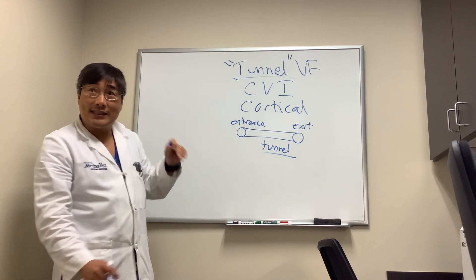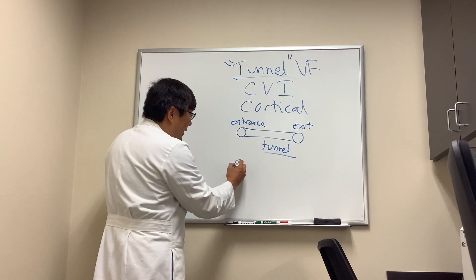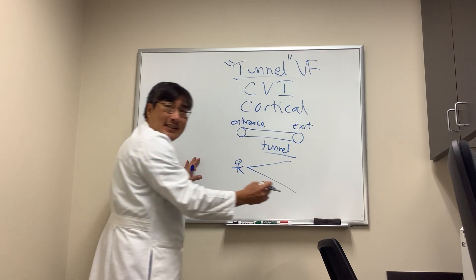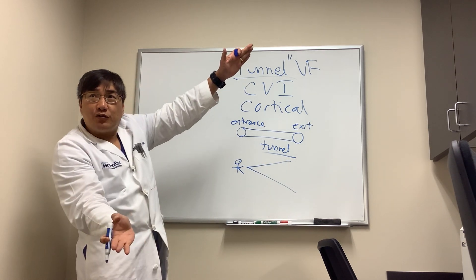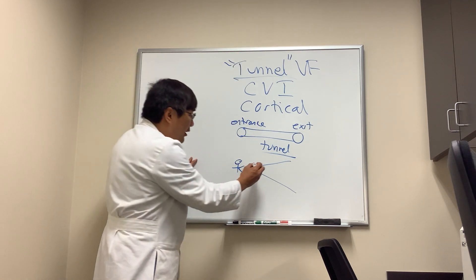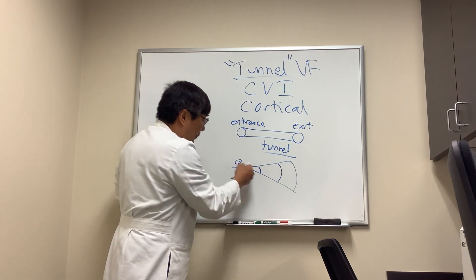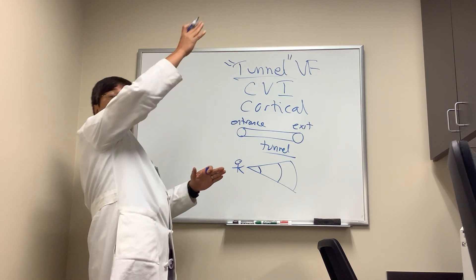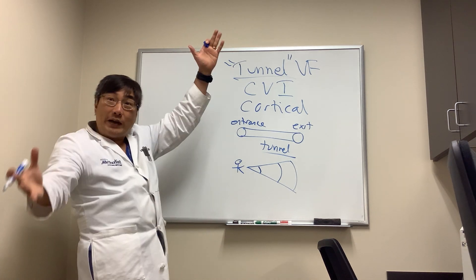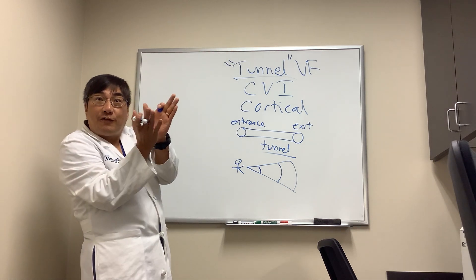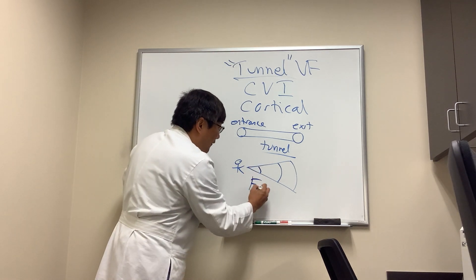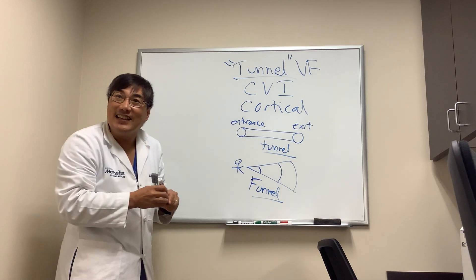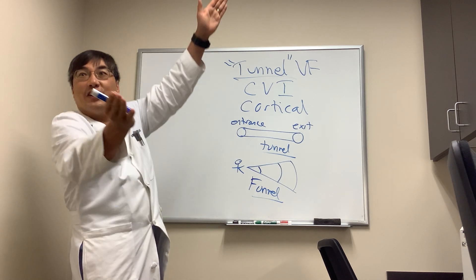The reason it's non-physiologic is if you are looking at a target, the further away the target is, the bigger your visual field is. Even though the arc subtended on your retina is the same, the circumference of the circle that you're viewing is bigger. So your field is actually a funnel, not a tunnel — it gets bigger as you go farther away.